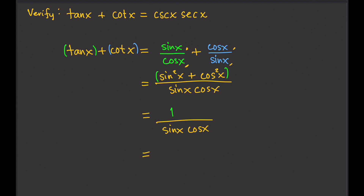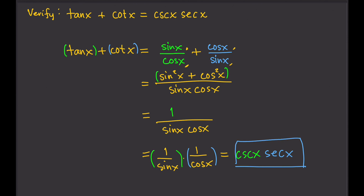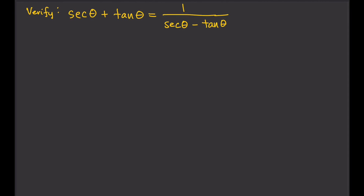Then we separate sine x and cosine x: one over sine x times one over cosine x. The reciprocal of sine is cosecant, and the reciprocal of cosine x is secant x. And that's exactly what we needed — the identity is verified.